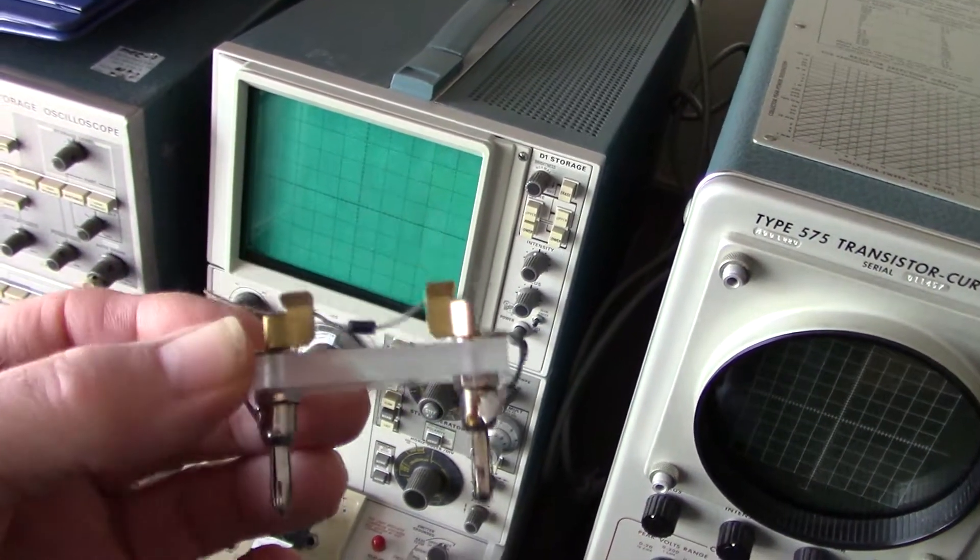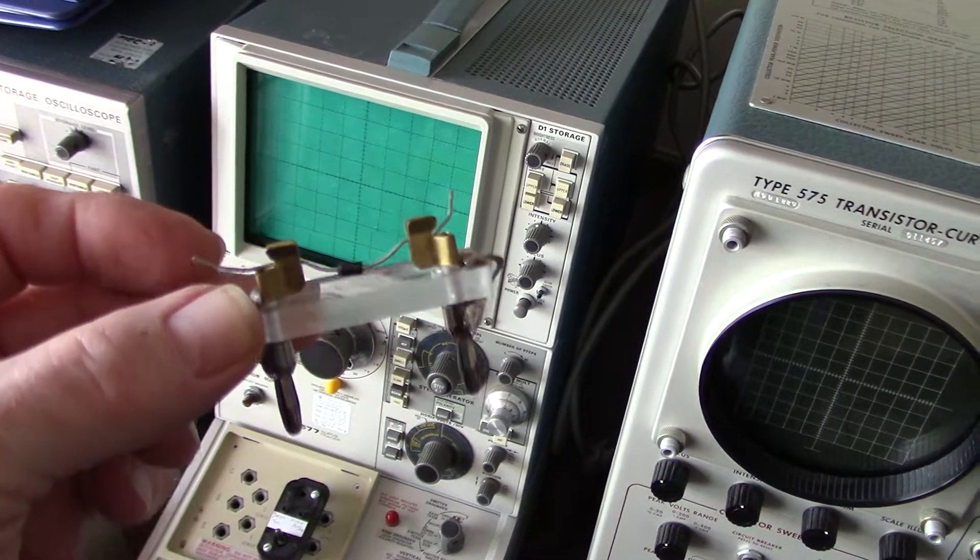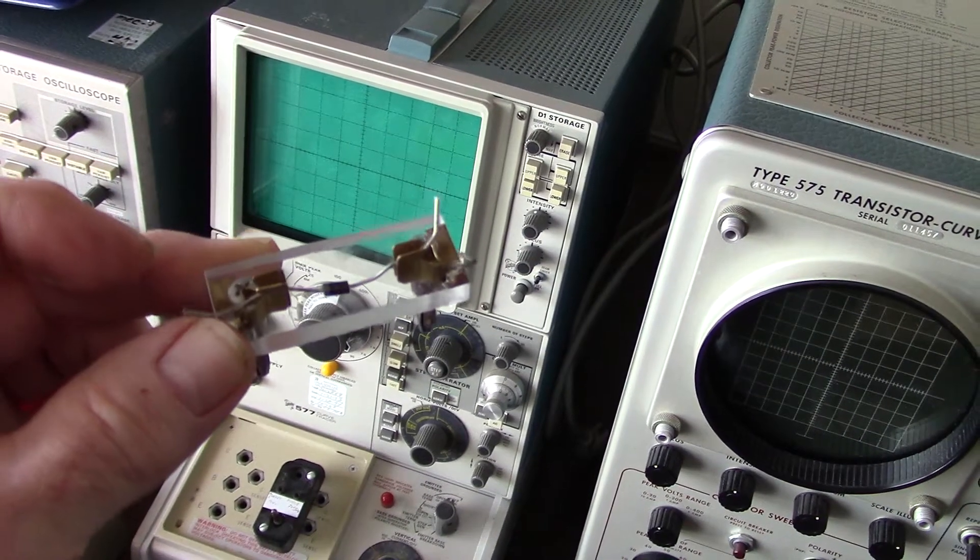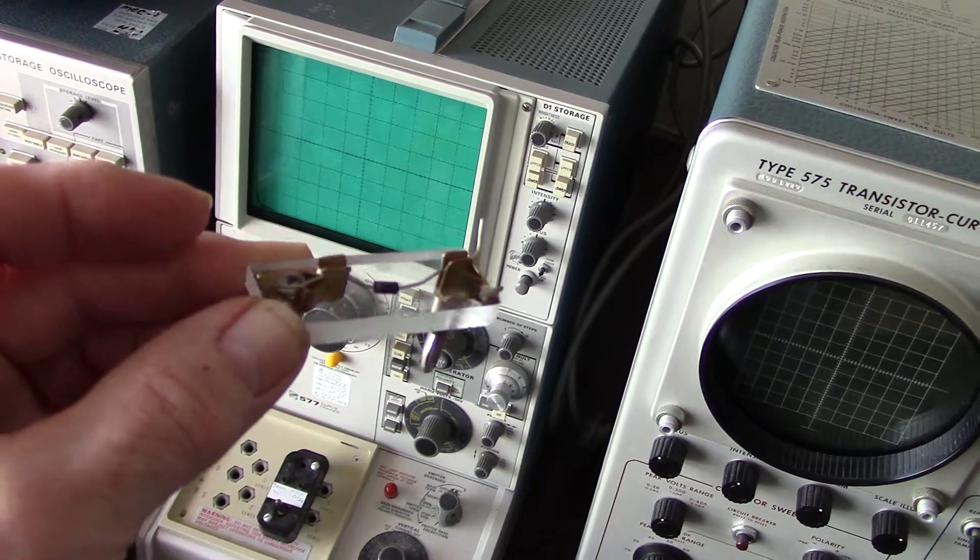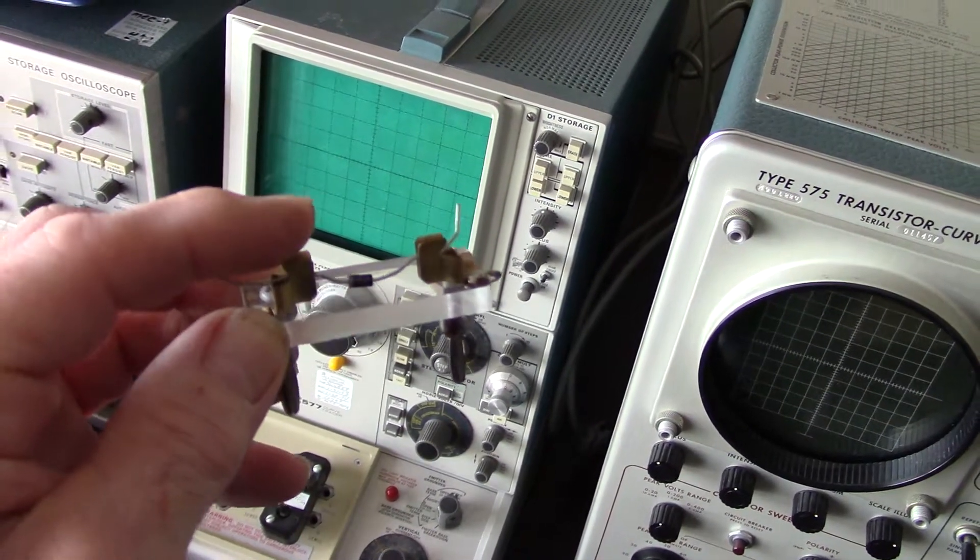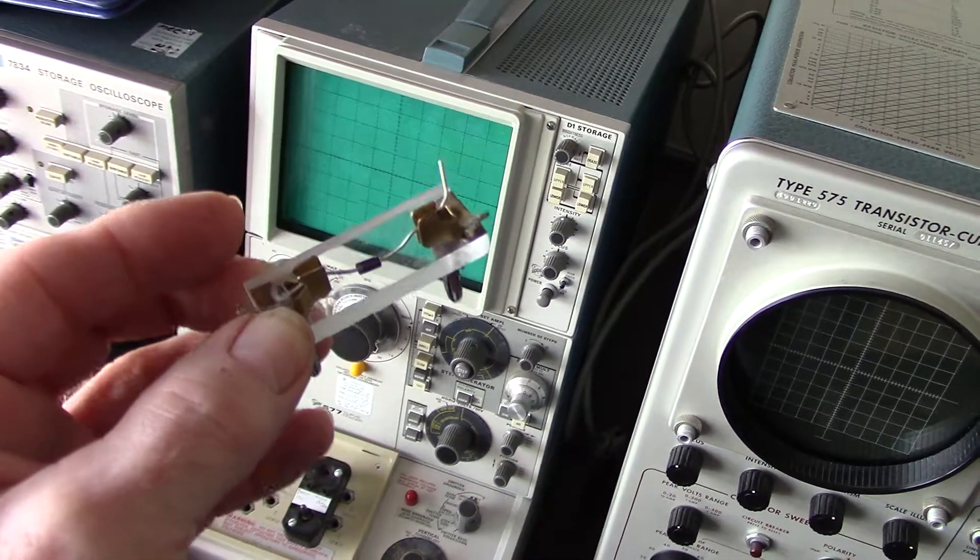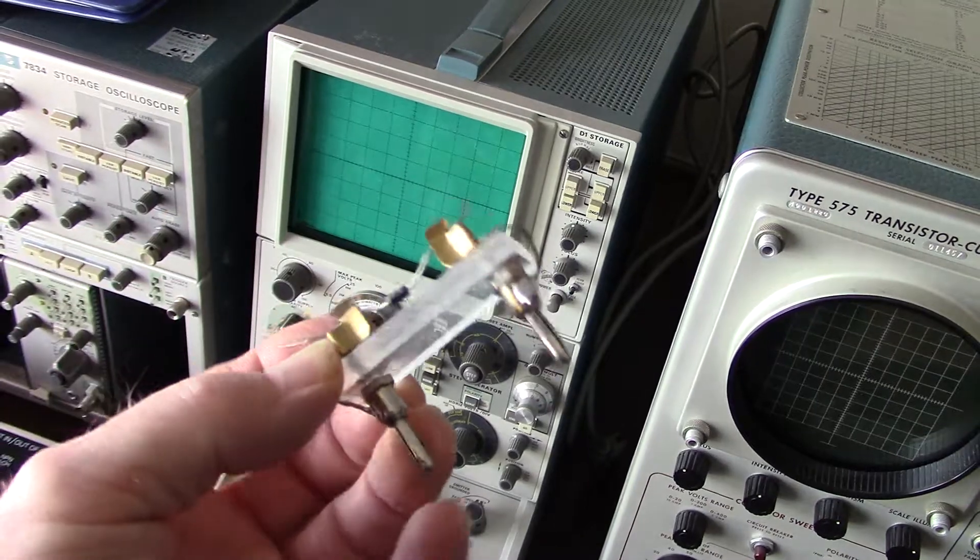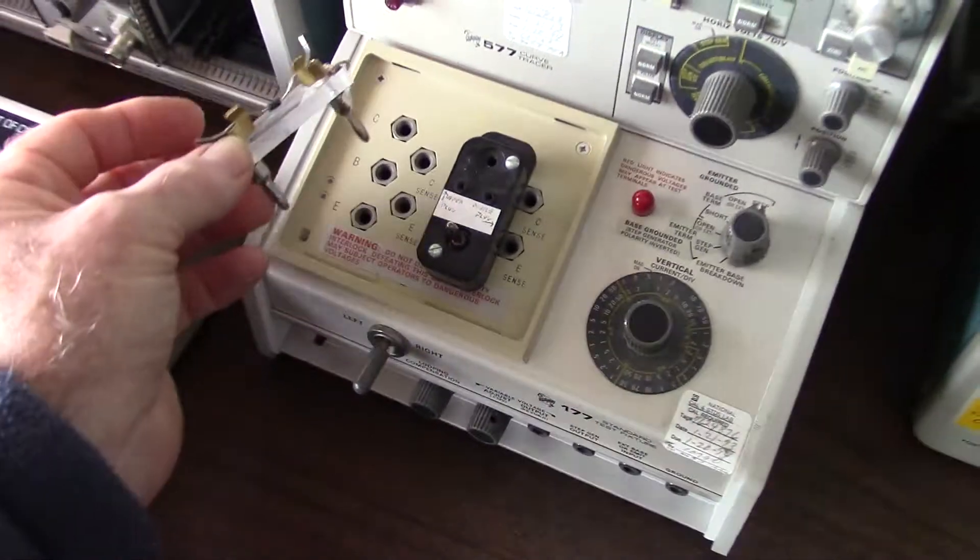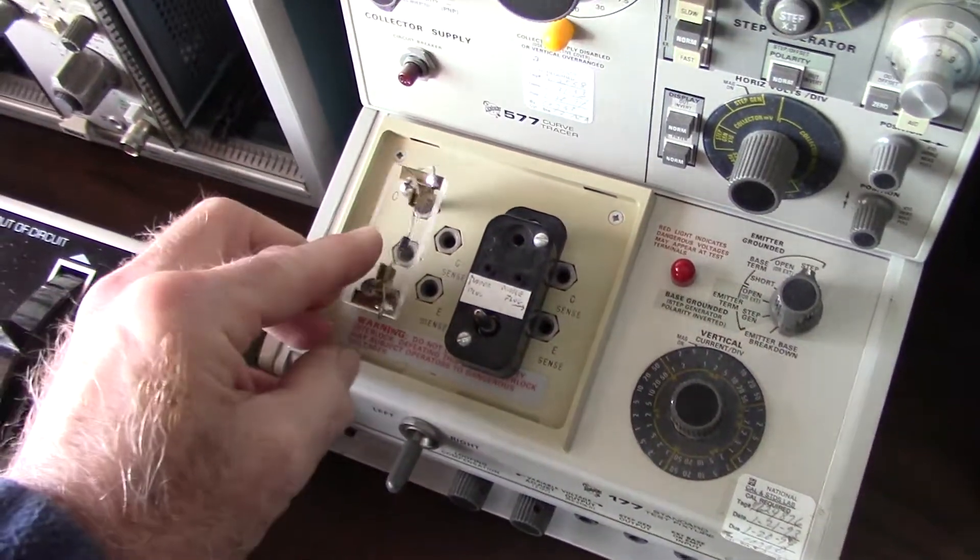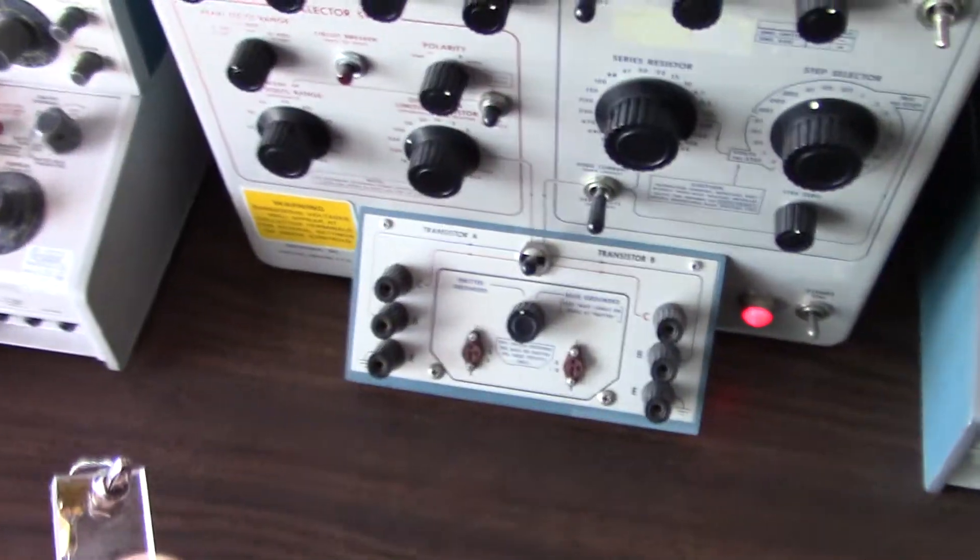This one is made up of two banana jacks and these brass points here are contacts out of an old light socket. The component, in this case a two-lead diode, just snaps right into the holder here. The spacing here is set up to match the input of the curve tracer. The nice thing about it is this is standardized, so